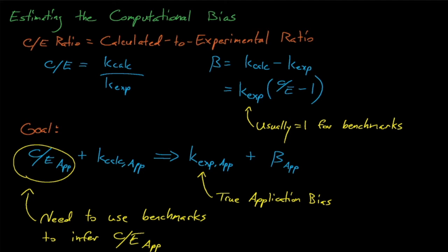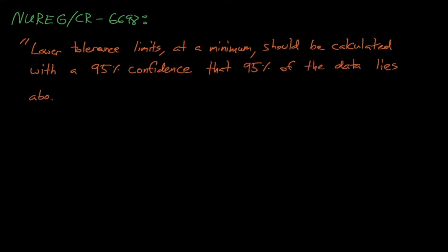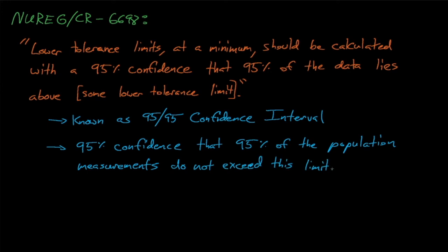Often we'll want to use statistical methods to estimate the 95-95 confidence interval for the C over E's, where the 95-95 interval is defined as the lower tolerance limit where we have a 95% confidence that 95% of the data lies above some tolerance limit. In other words, at the 95-95 limit, we have 95% confidence that 95% of the population does not exceed this limit. If our population is comprised of C over E values from known benchmark experiments, then we can use this distribution of C over E's to quantify the smallest credible C over E for our target application, which thus gives us the highest credible K effective for that application.